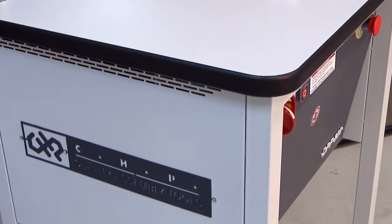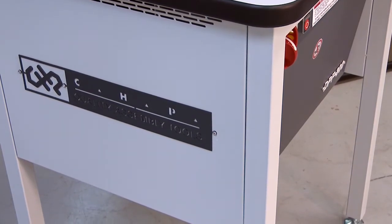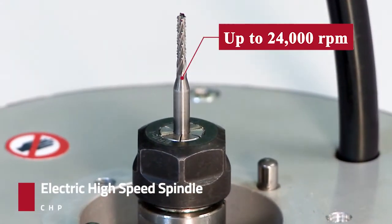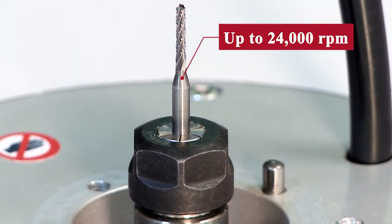The table steel construction provides a sturdy and stable working platform and the electric high-speed precision spindle operates at a speed of up to 24,000 RPM.